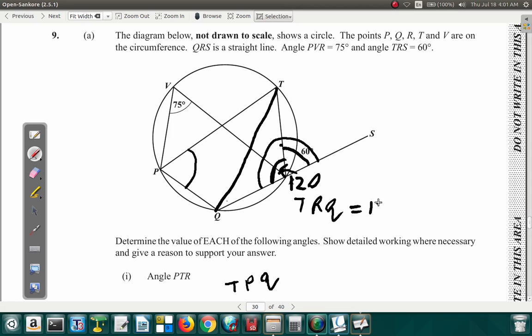So TPQ is 120 degrees. Oh, that's not T. It's TRQ, right? R is here. 120 degrees. Now, TPQ. TPQ plus TRQ adds to 180.